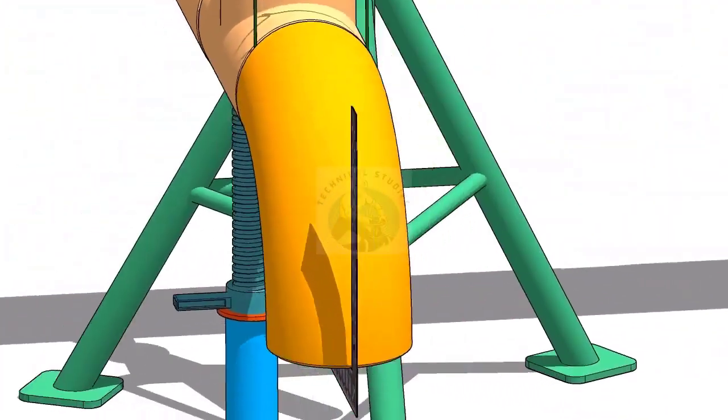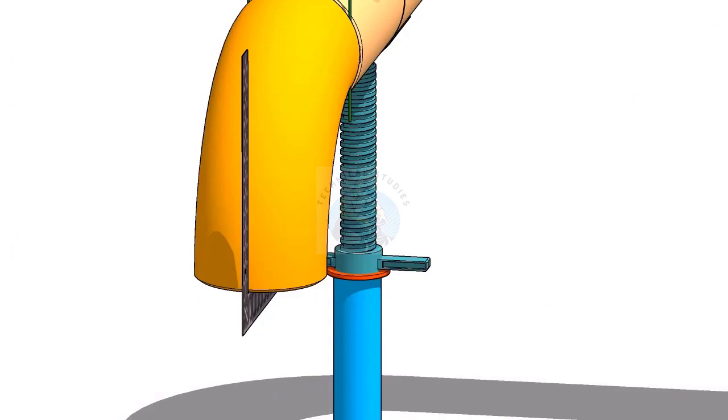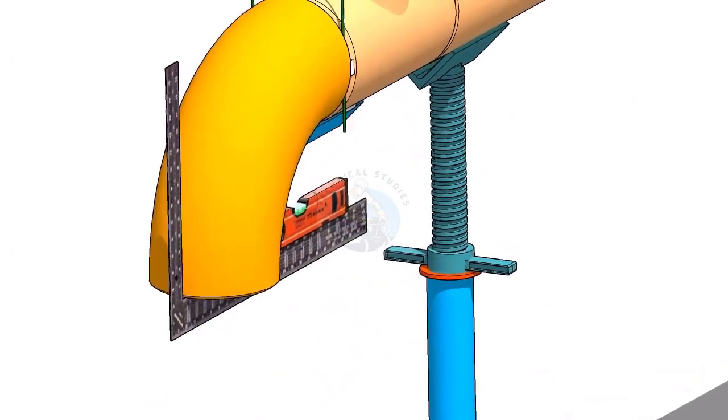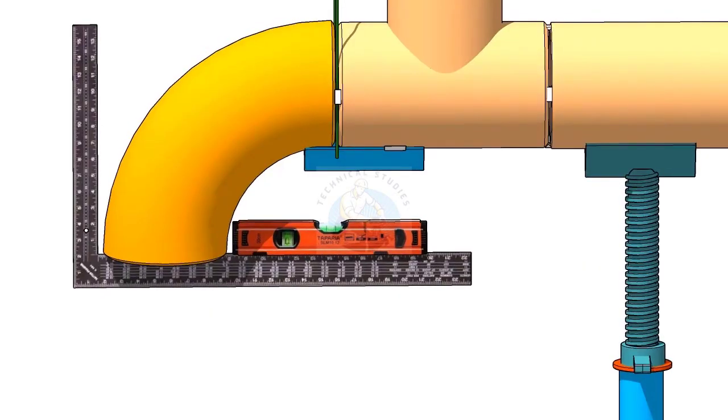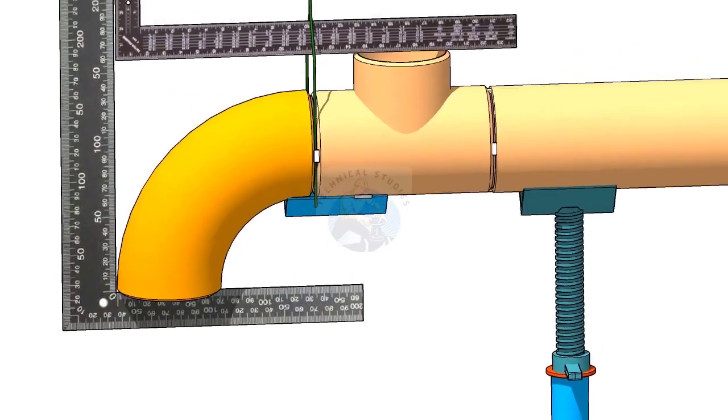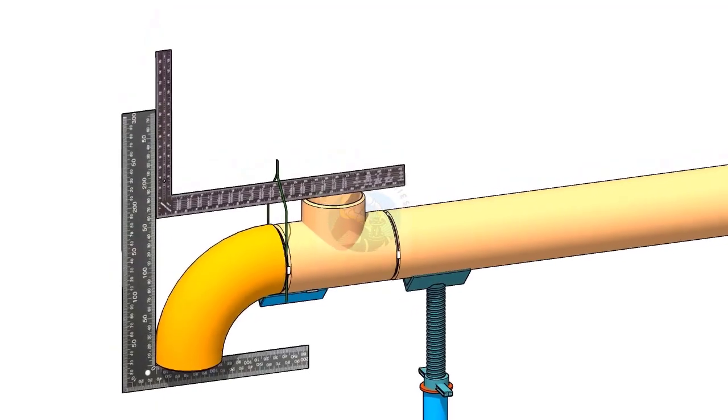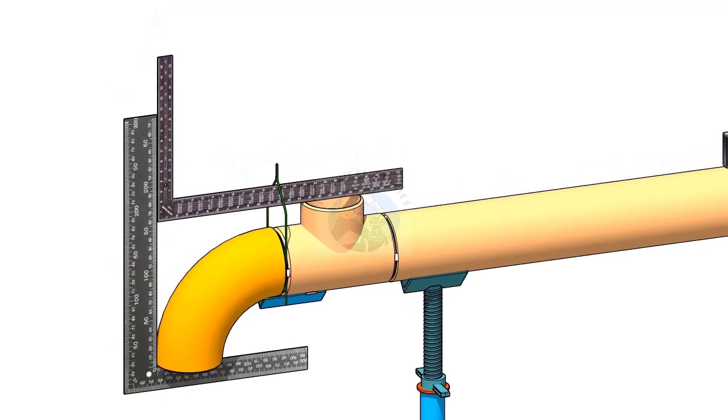Rotate the right angle and the spirit level longitudinal and maintain the elbow face level. Check the branch face and the elbow face is right angle to each other.